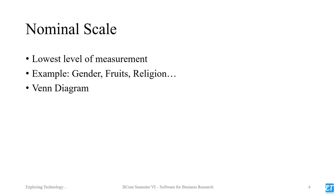Other examples of nominal values include religion: Christian, Hindu, Muslim, Sikh, Buddhist. These are values used in the nominal scale with no order of importance.